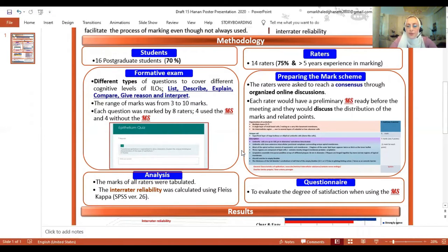As regards preparing the mark scheme, that was really the tough part. The raters were asked to reach a consensus through organized online discussions. Each rater would have a preliminary mark scheme ready before the meeting, and they would discuss the distribution of the marks, the relevant points, and the specificity of the details. This is also an example of a mark scheme for one of the questions.